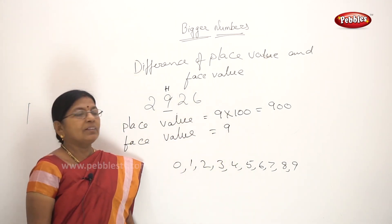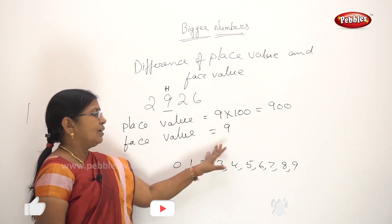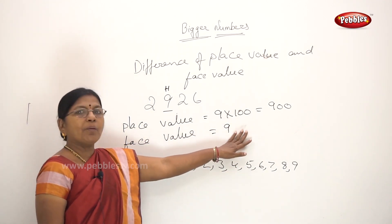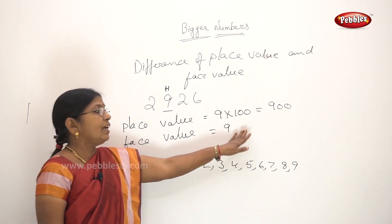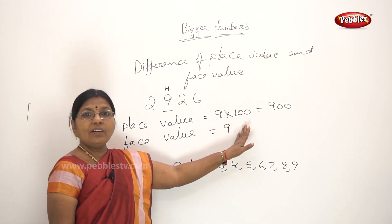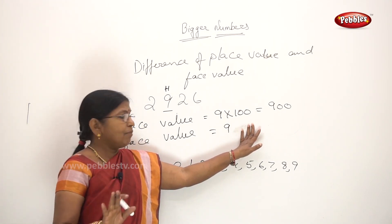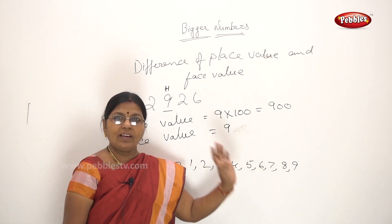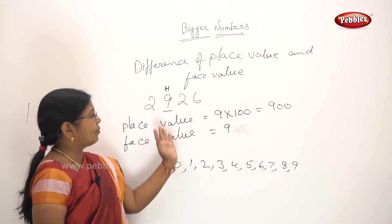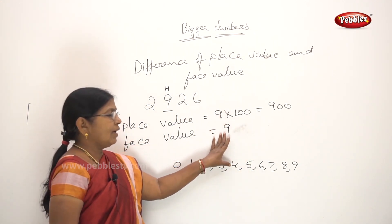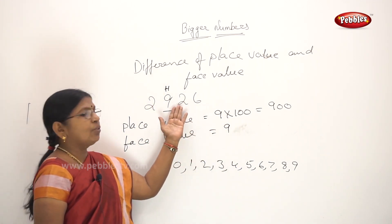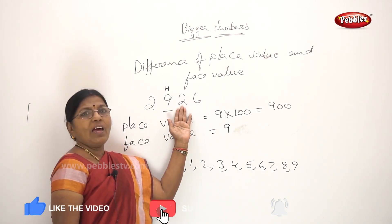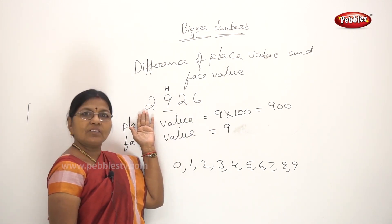The digit 9 — what is its face value? 9. That is the place of units. So 9 into 1 equals 9. Now with the number 2926: the first 2 is in the thousands place — 2 into 1000 equals 2000. The second 2 is in the tens place — 2 into 10 equals 20. Same digit, different place values.